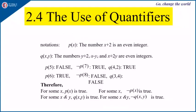Let us see the notations for the quantifiers. There are two kinds of quantifiers: one is the existential quantifier and another is the universal quantifier.